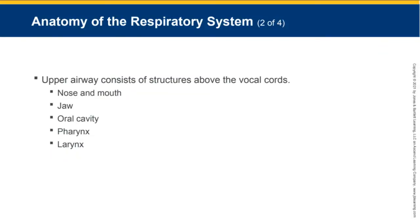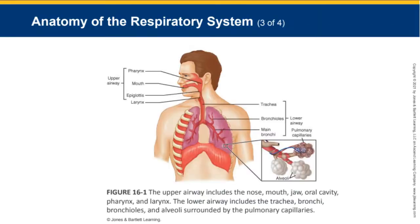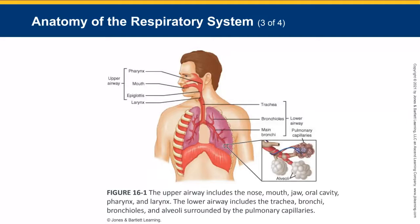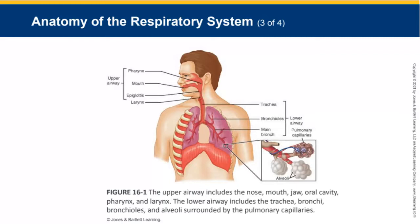The upper airway consists of all structures above the vocal cords that are involved in respiration, which would include the nose and mouth, the jaw, the oral cavity, the pharynx and the larynx. Here's a nice representation: the pharynx, the mouth, the epiglottis, the larynx — those make up the upper airways. And then we see the trachea, the bronchioles, the main bronchi and the alveoli — those make up the lower airways.